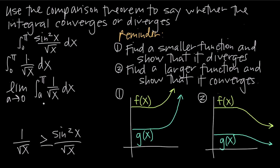We replace that undefined value with a and take the limit as a approaches 0. We have to say as a approaches 0 from the positive side, because the interval we're interested in is between 0 and pi. If we graph that interval, we're approaching 0 from inside the interval — from the right-hand side — not from outside. So we say take the limit as a approaches 0 from the positive side, and we replace that 0 with a.